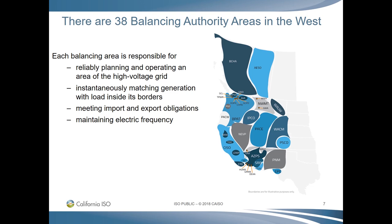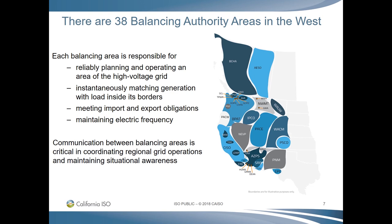While all ISOs are BAs, not all BAs are ISOs. An ISO typically has a competitive energy market, which most BAs do not have. In fact, there are only two BAs in the West that have a competitive energy market: the California ISO and the Alberta Electric System Operator in Canada. Working within the Interconnection enables us to enhance reliability by having greater situational awareness and access to larger resource pools, integrate and use renewable generation more efficiently, and manage costs while maintaining continual communication between the BAs.